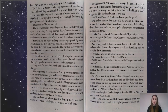'You stay here,' Sorrel whispered to Ben. 'I don't think Rat's cousin will be particularly pleased to see a human being.' 'Oh, come off it.' Ben crawled through the gap and straightened up. 'If it doesn't get a fright at the sight of you, it won't mind me either. Anyway, it's living in a human building — I don't suppose I'll be the first human it ever saw.' 'He,' hissed Sorrel. 'It's a he, and don't you forget it.' She looked around curiously. As well as a little study area under the chair, there was also a human-sized desk, a huge chest of drawers, and a large old globe of the world hanging at an angle on its stand. 'Hello?' called Sorrel. 'Anyone home? Oh, drat it. What's his name again? Gisselbur— No. Godfrey. No. Gilbert Greytale or some such.' Something rustled above the desk. Ben and Sorrel looked up and saw a fat white rat looking down at them from his perch on top of a dusty lampshade.